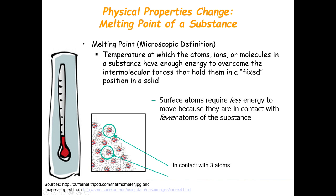You can observe this in the diagram: a surface atom is in contact with only three atoms, whereas an atom chosen from the inside of that material is in contact with seven atoms. This is why surface atoms require less energy to move — because they are in contact with fewer atoms of the substance. This is why the properties of a material are affected when you reduce the size of that particular material.